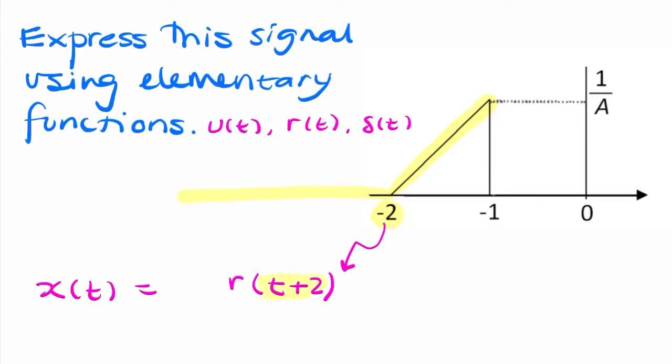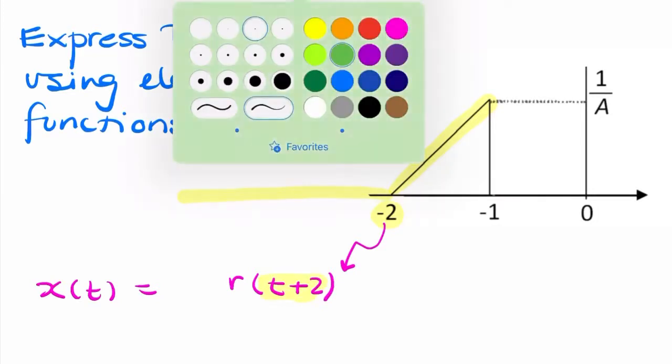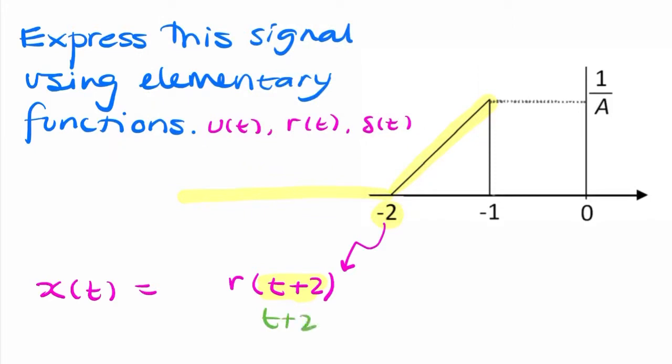So that's the same as saying t plus 2. And you can always check that just by saying, well, if t plus 2 equals 0, t equals minus 2. And that's where the ramp function starts. So that's the first part. We describe this ramp function.